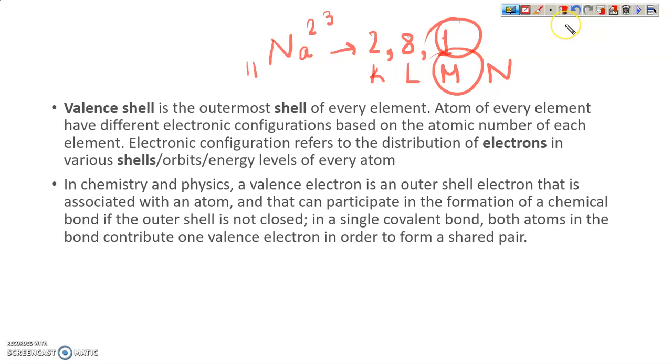The electrons filled in the valence shell are called valence electrons. In this example, there is one valence electron which belongs to M shell. This is the valence shell and this is the valence electron.